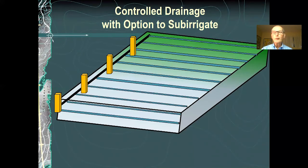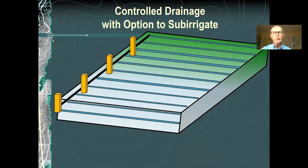Another example shows a field divided into four parts, each with a one-foot elevation difference, where several control structures at the end of the field can be set accordingly. The control boxes can be operated by hand with different blocks, but there are also units available that can be remotely controlled with cellular transmission of information, so the system can also be fully automated.